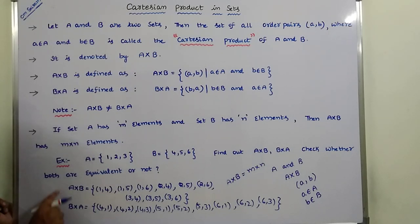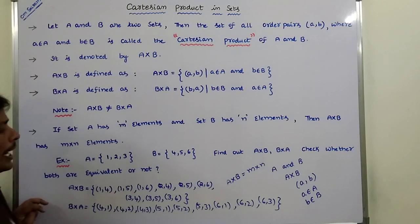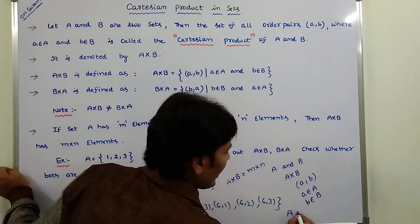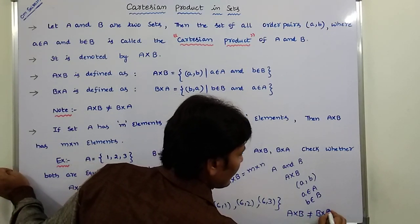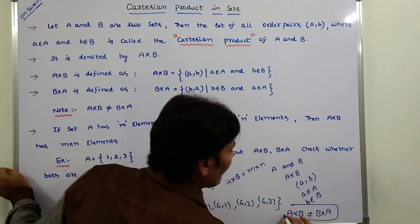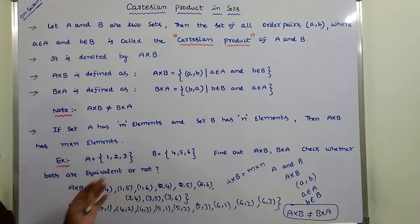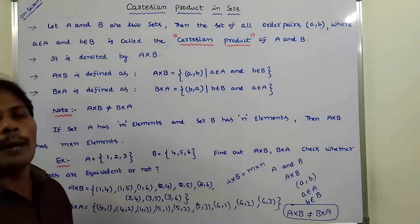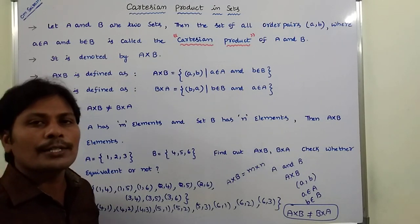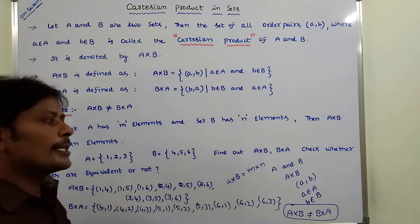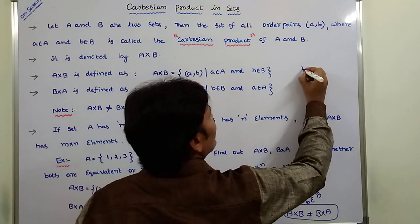By observing these two Cartesian products, we can conclude that A cross B is not equal to B cross A. This is the final conclusion and the introduction to the Cartesian product operation on sets. Thank you for watching this video. If you like this video, please subscribe to my channel.